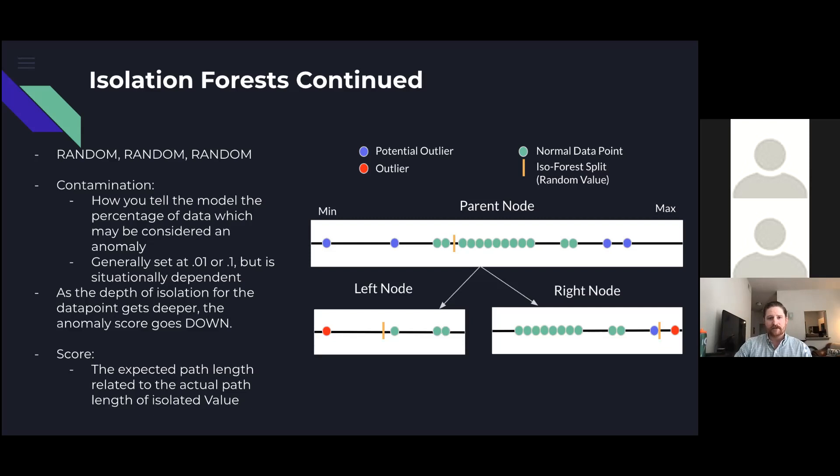Because anomalies are going to be the data points furthest from the median or mean of this range, they're going to inherently be isolated higher up on the tree. The orange line is representing the randomly chosen value for that split. Once a node has only one data point, the decision tree classifies that point as an anomaly and uses the data point's depth on all the other trees within the forest to determine a respective anomaly score.